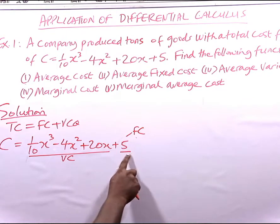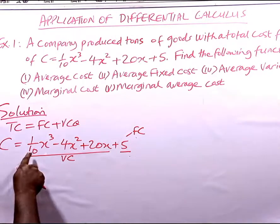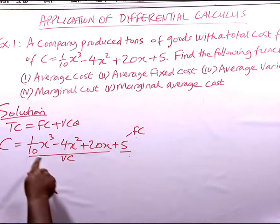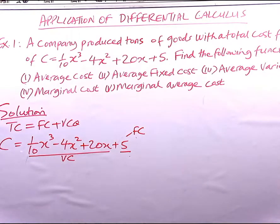Whereas the remaining terms — (1/10)X³, -4X², and 20X — make up the variable cost.